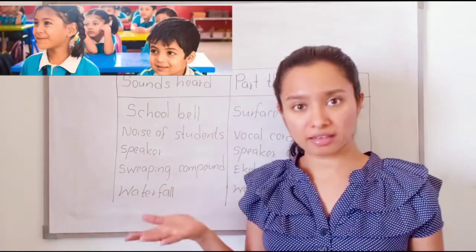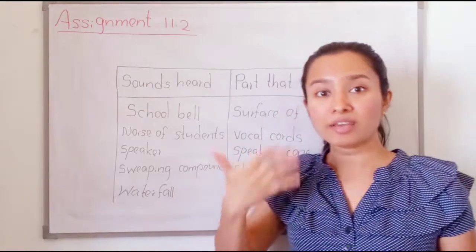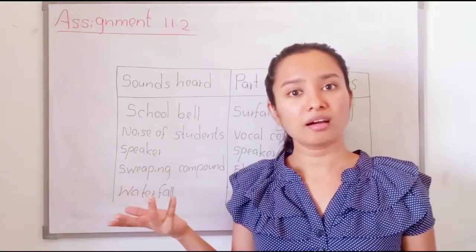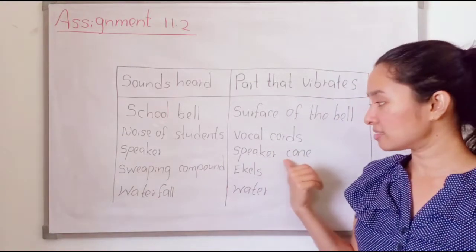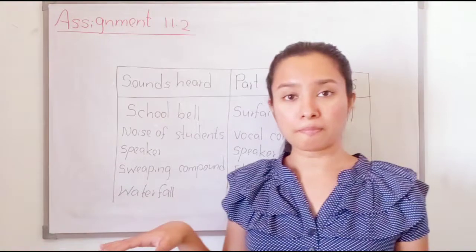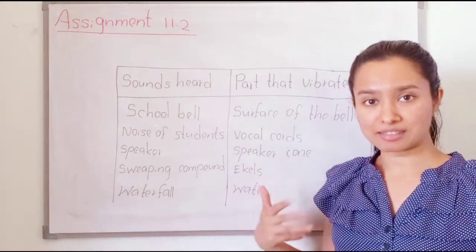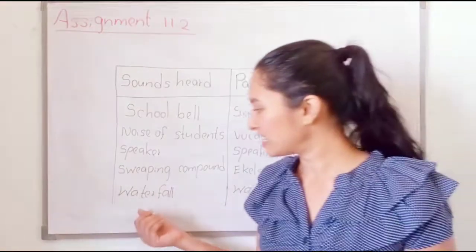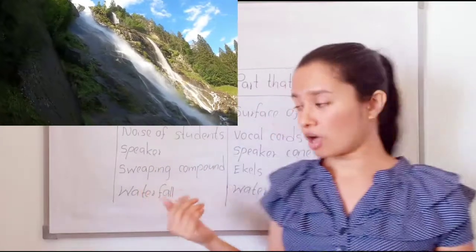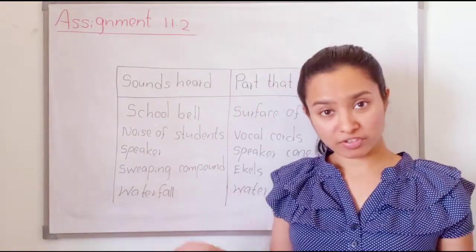Noise of students — in school, you can hear the noise of students. What is the part that vibrates? The vocal cords. When you are speaking, the vocal cords will vibrate. There are also speakers in your school — what is the part that vibrates? The speaker cone will vibrate. You can also hear the sound of sweeping the compound using a broom — the bristles are vibrating, then we can hear the sound. Then think about a waterfall — we can hear the sound of falling water. What is the part that vibrates? Water. Likewise, you have to list more sounds — both artificial and natural sounds.